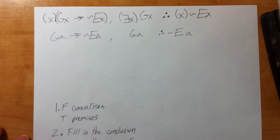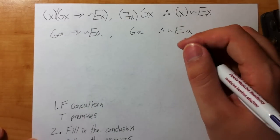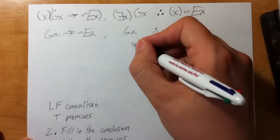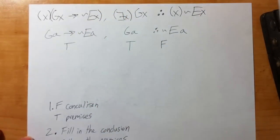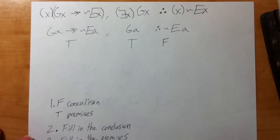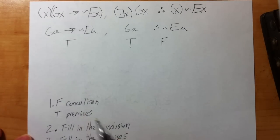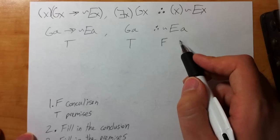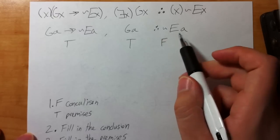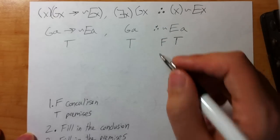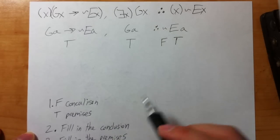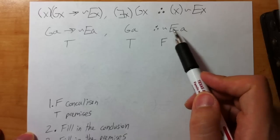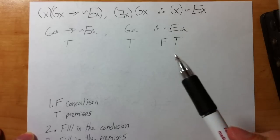Step one: how do I make the conclusion false? I put an F under the main connector, which is the tilde. How do I make the premises true? I put T under the main connectors of the premises. Step two, fill in the conclusion: if the tilde is false, from the first test we know the tilde is always opposite, so EA is true. Now every symbol in the conclusion has a value, so we're done filling it in.